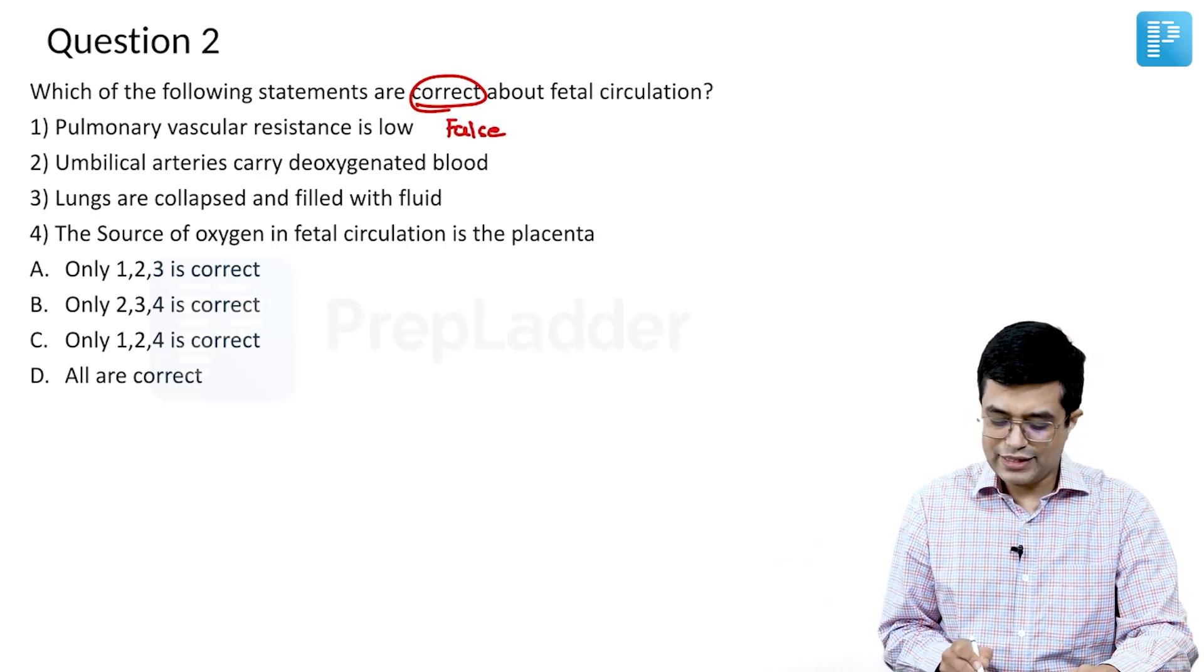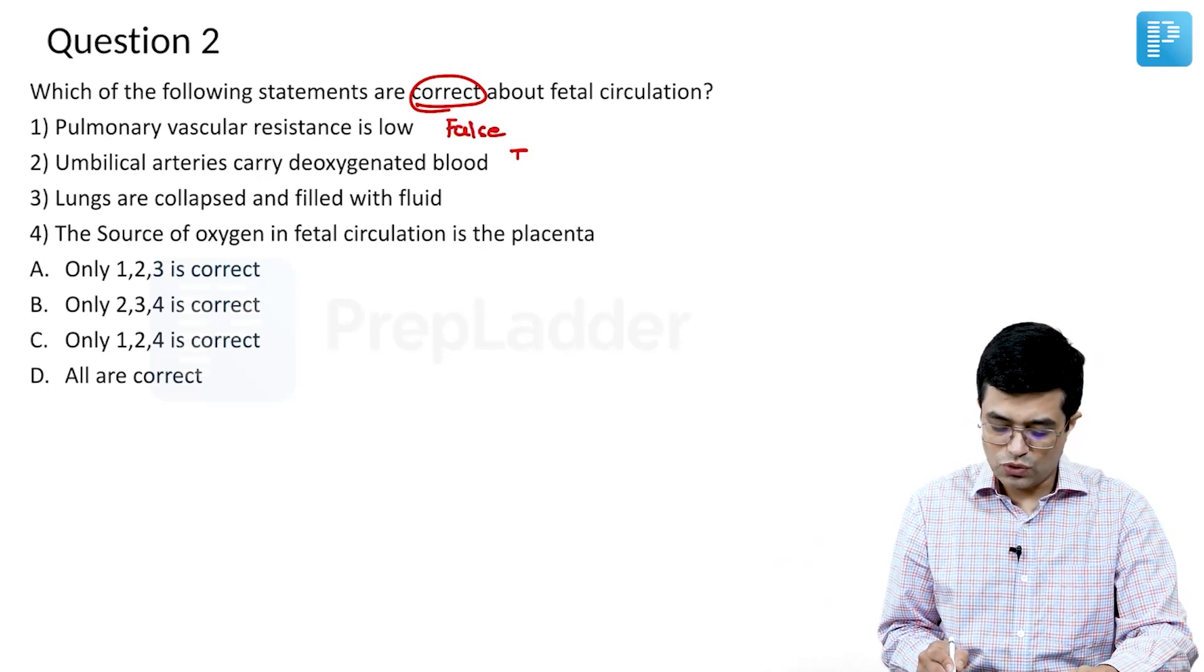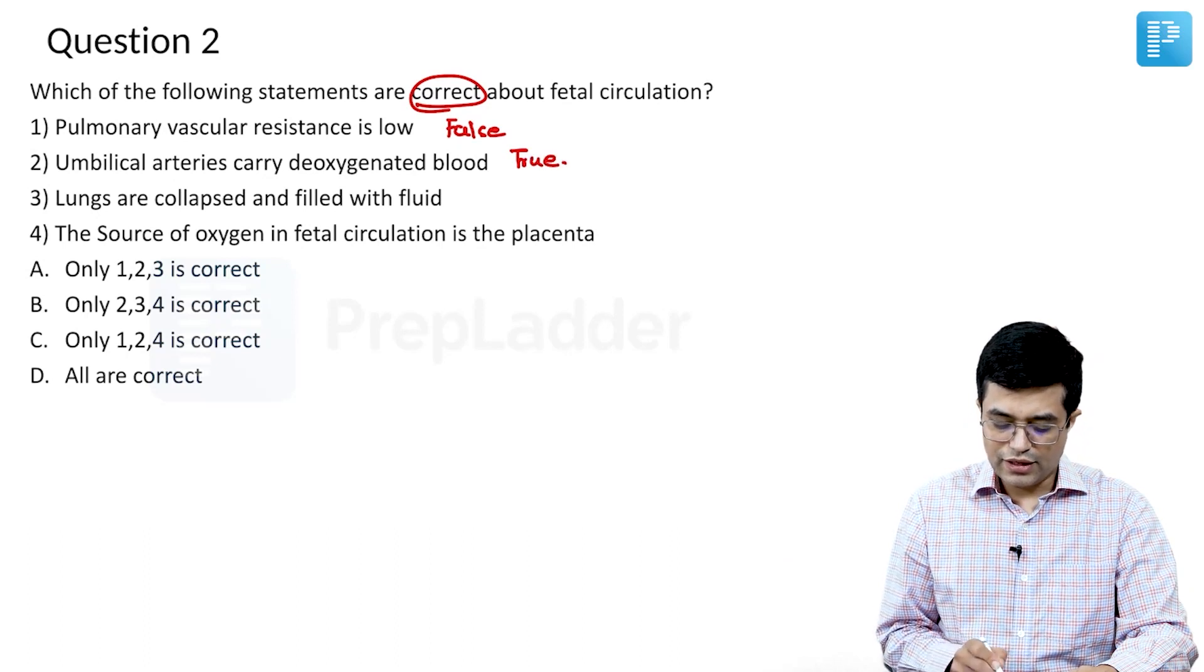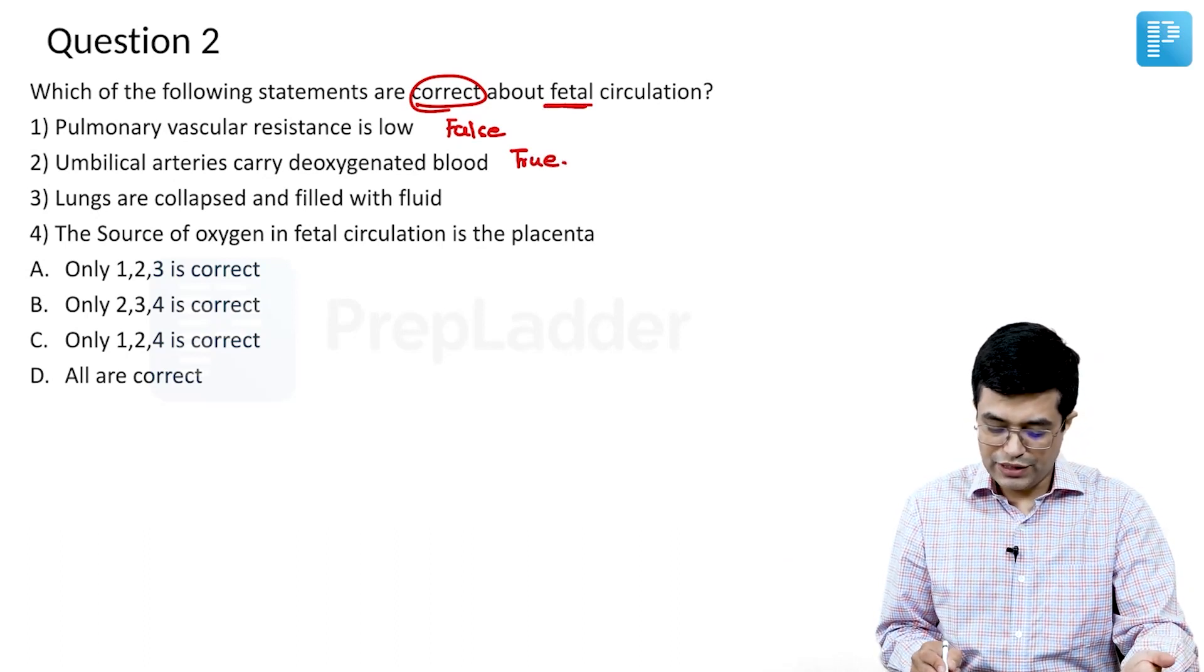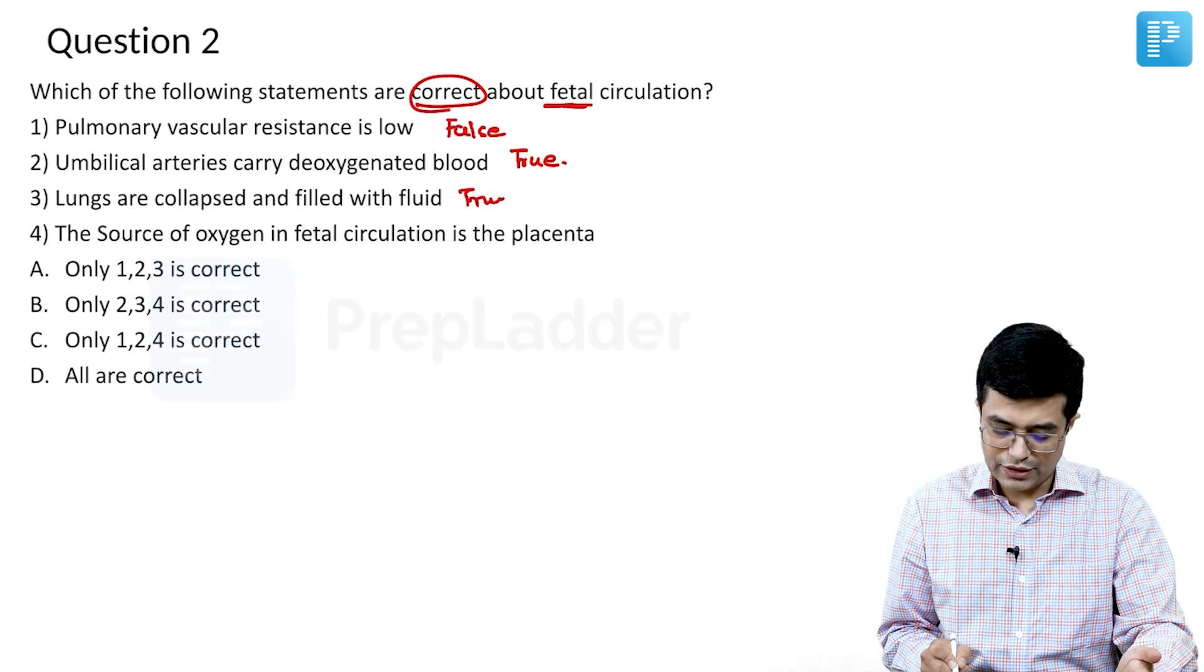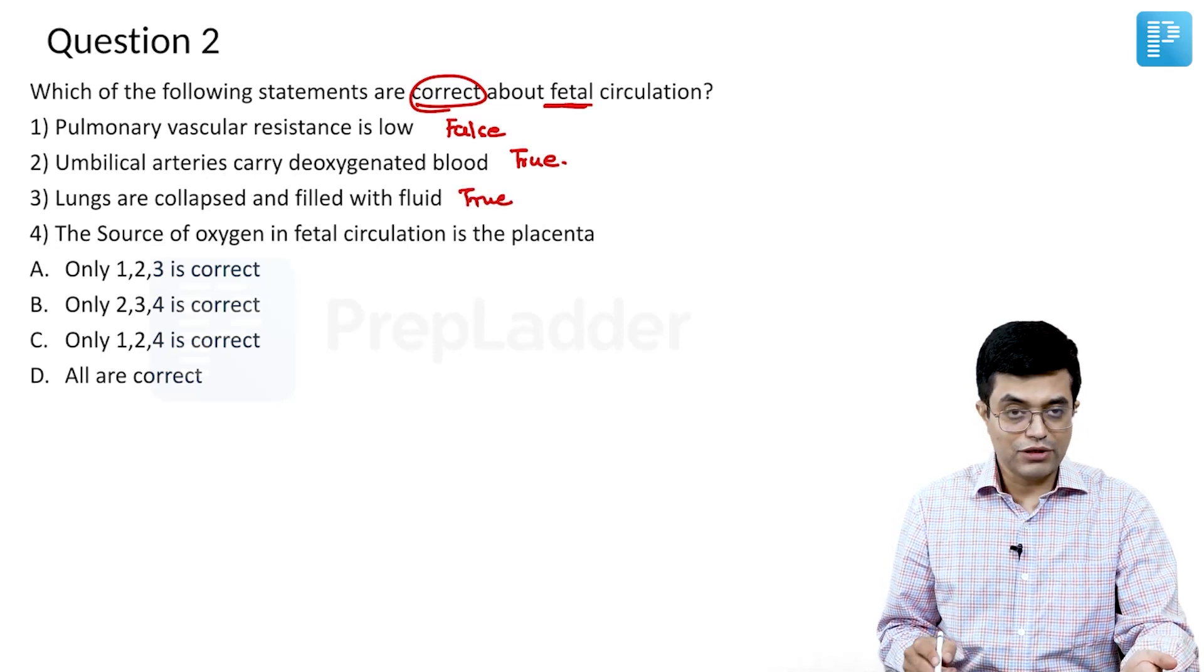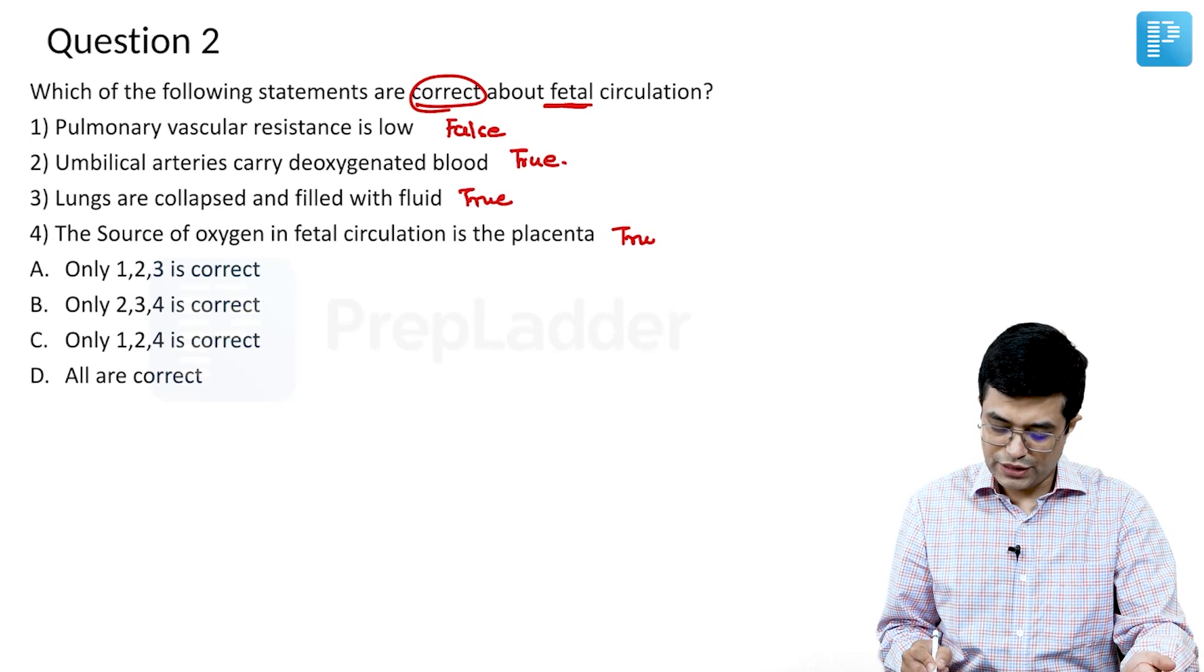Option number two, umbilical arteries carry deoxygenated blood. It is a true statement. Lungs are collapsed and filled with fluid before life. We are talking about fetus, so it is also a true statement. Source of oxygen in fetal circulation is the placenta, is a true statement.